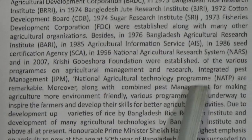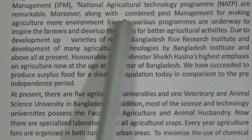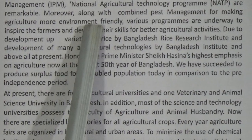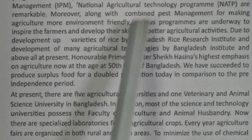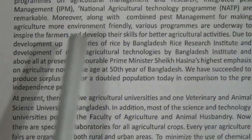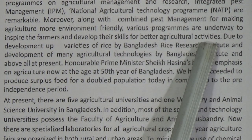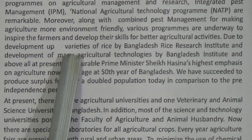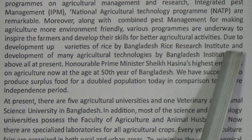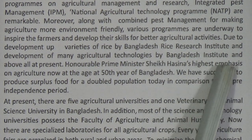Various programs on agricultural management and research such as Integrated Pest Management (IPM) and National Agricultural Technology Program (NATP) are remarkable. Moreover, combined pest management programs are underway to make agriculture more environment friendly, inspiring farmers and developing their skills for better agricultural activities, including development of rice varieties by BRRI and many agricultural technologies by BINA.